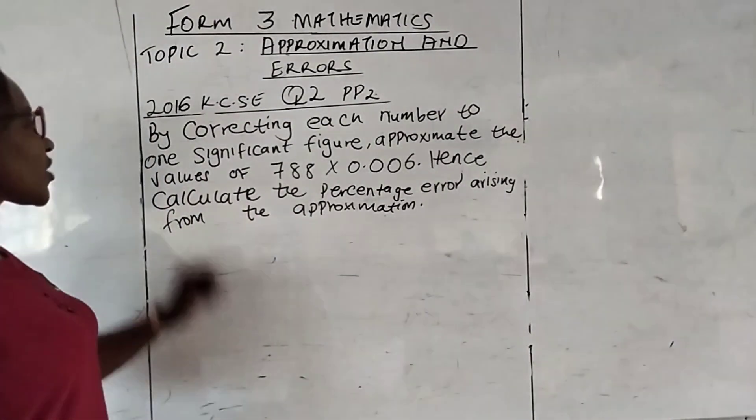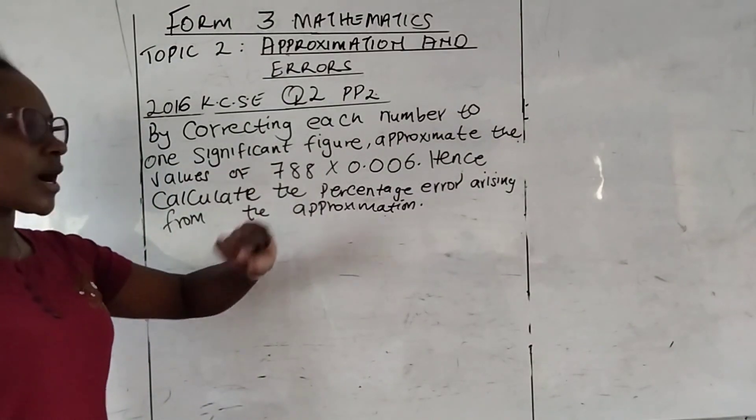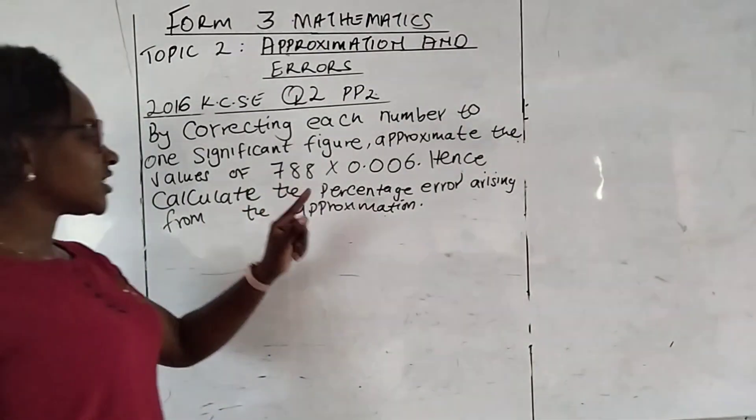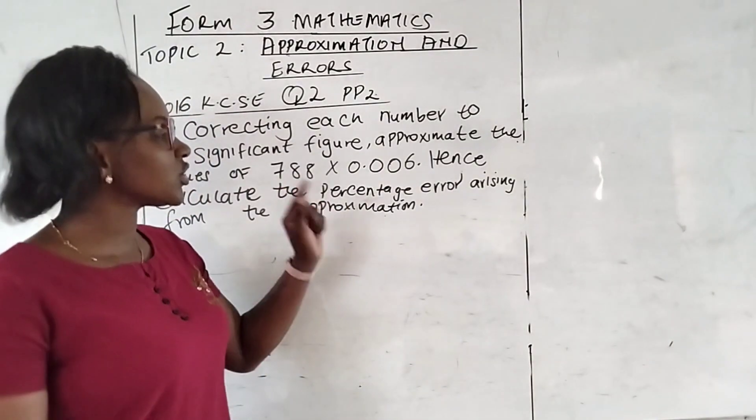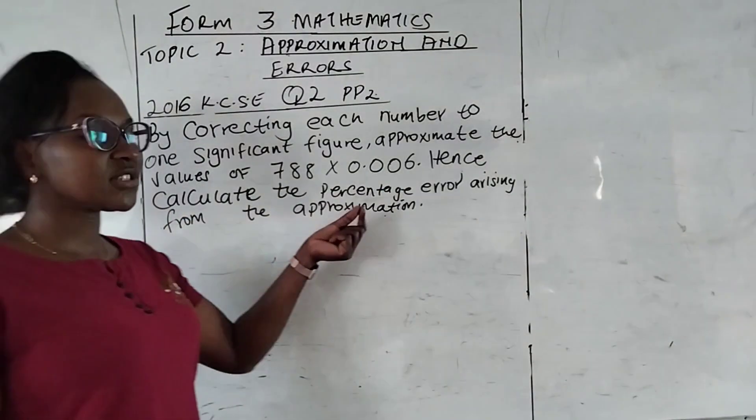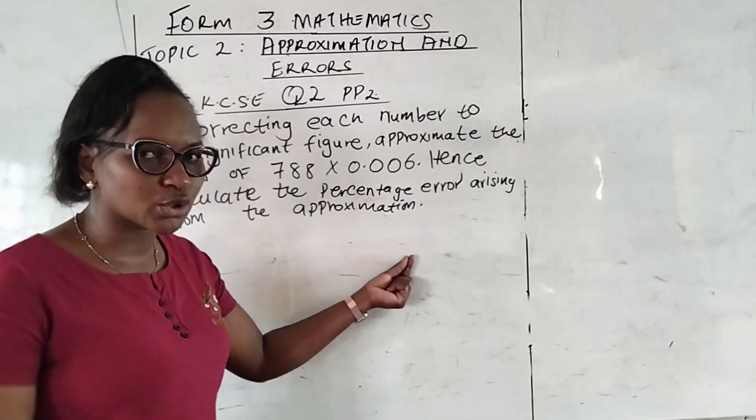It reads, by correcting each number to one significant figure approximate the values of 788 multiplied by 0.006. Hence, calculate the percentage error arising from the approximation.